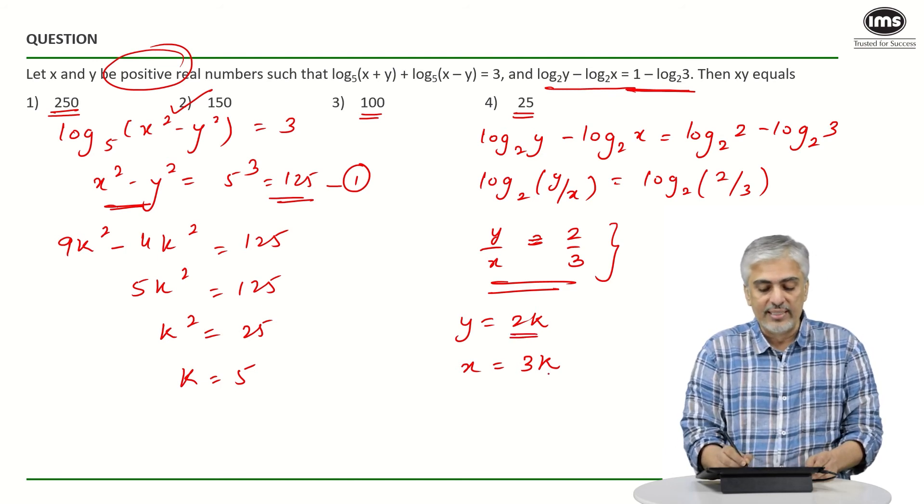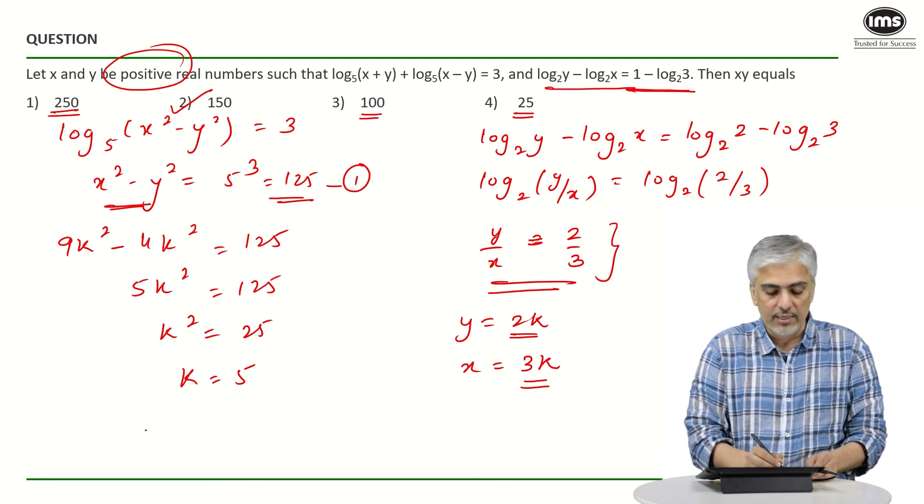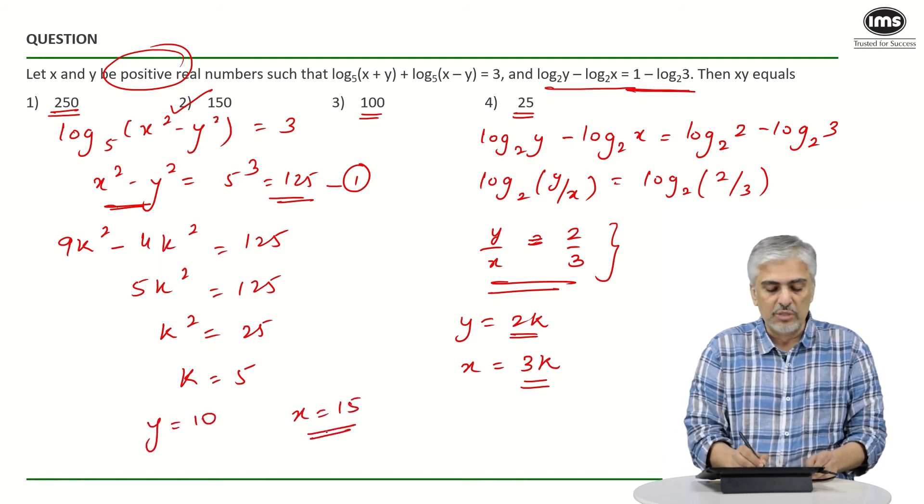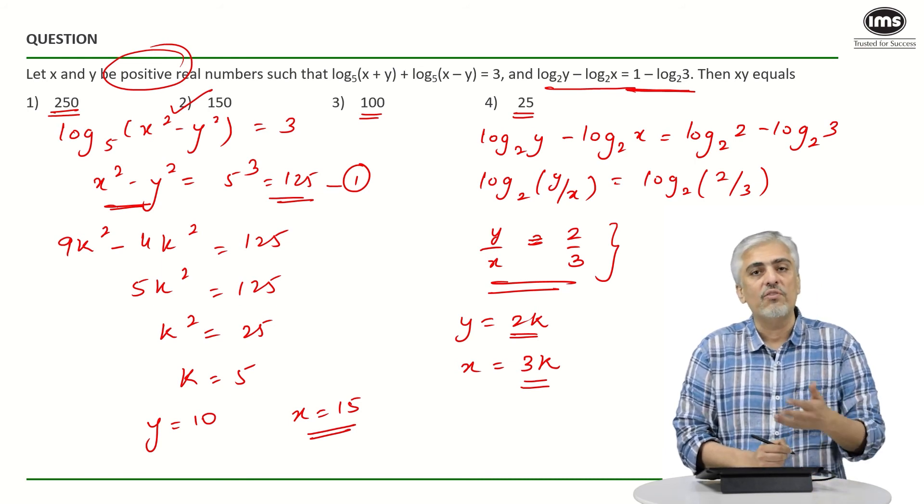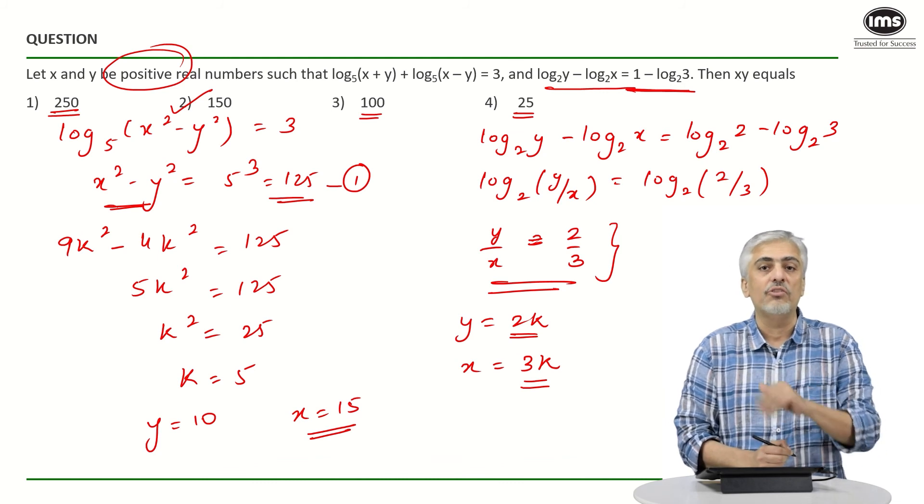If k is 5, y is 10 and x is 15, y is 10, x is 15, which means the answer to the question will be 150, which is the second option, which I had told you could have got much faster if you were thinking on your feet.